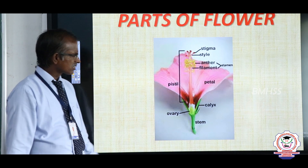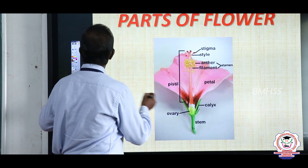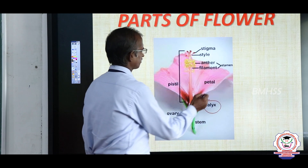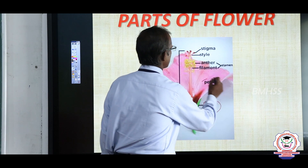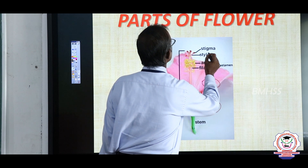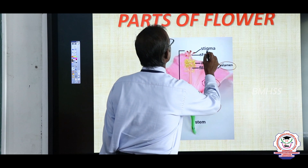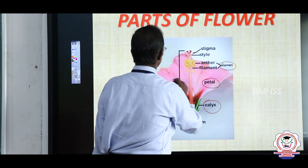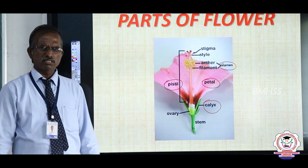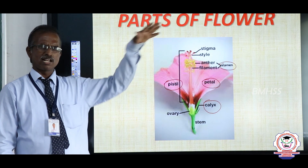What are the 4 parts? The first one is calyx, then petals, then stamen, and pistil. These are arranged in 4 layers or 4 whorls.